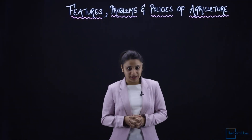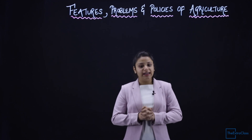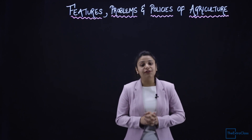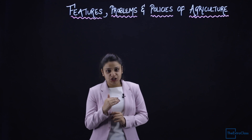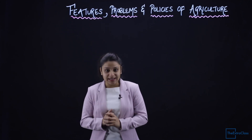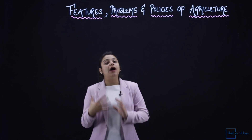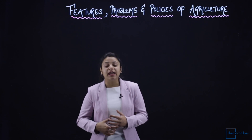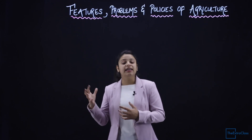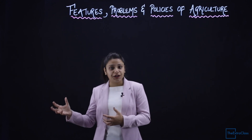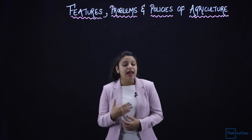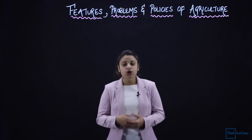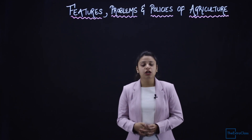Hello and welcome to Extra Class Economics. Today we are going to start the chapter on features, problems, and policies of agriculture. In the first chapter, we covered the condition of the Indian economy at the time of independence, including the condition of agriculture. In this chapter, we will study the features of agriculture in the Indian economy, its problems, and the government policies related to these issues.